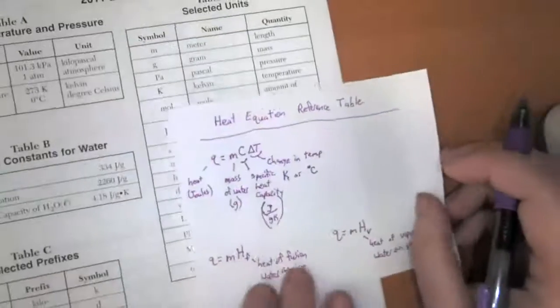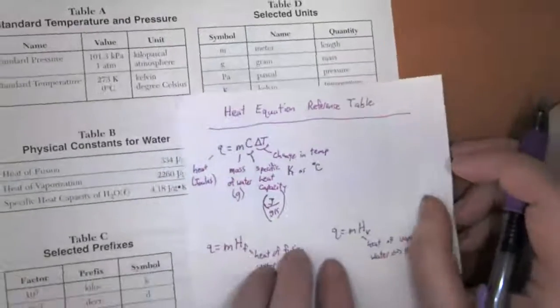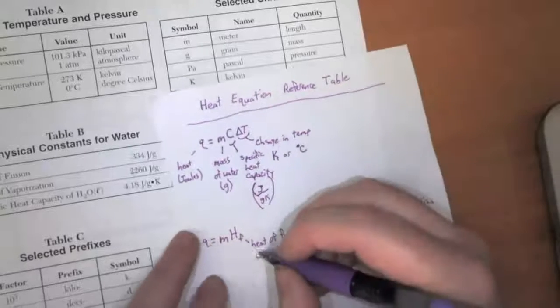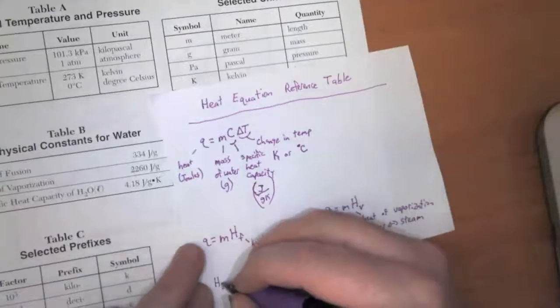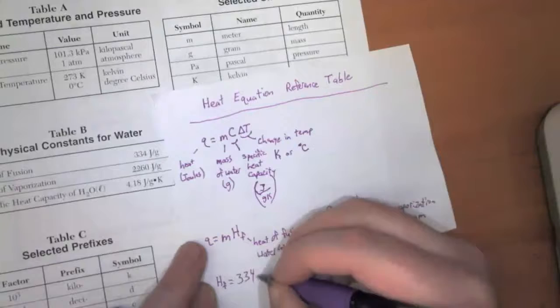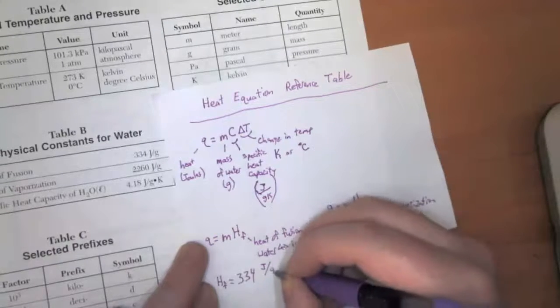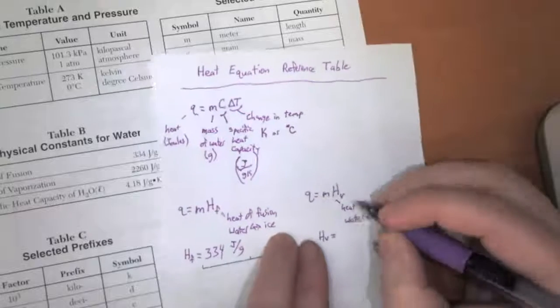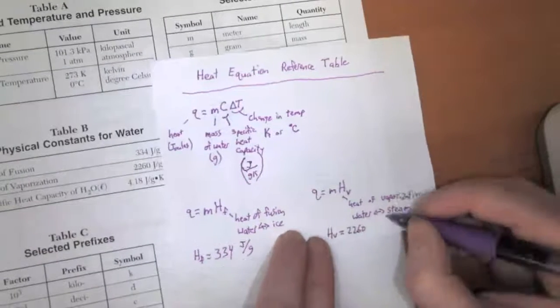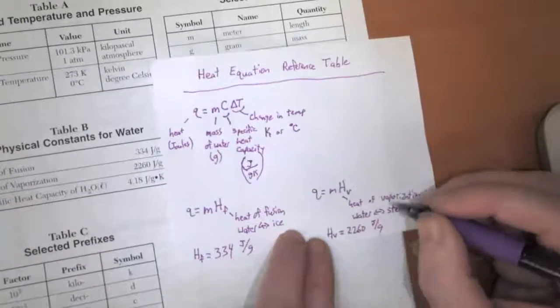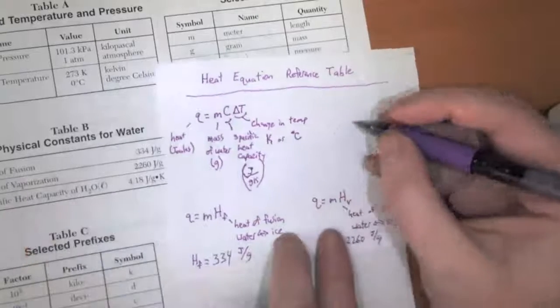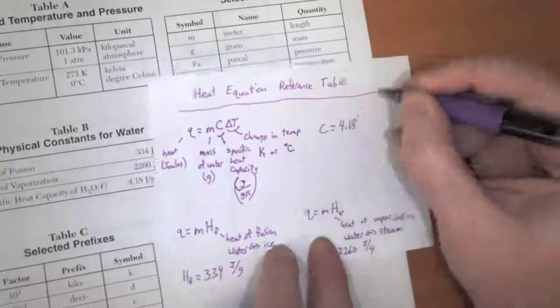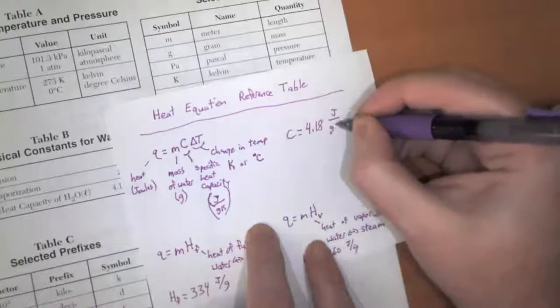OK, and so let me also write down all of these constants for water. All right, so the heat of fusion. The heat of fusion is equal to 334 joules per gram. The heat of vaporization is equal to 2260 joules per gram. And the specific heat capacity, like we said before, of water is 4.18 joules per gram Kelvin.